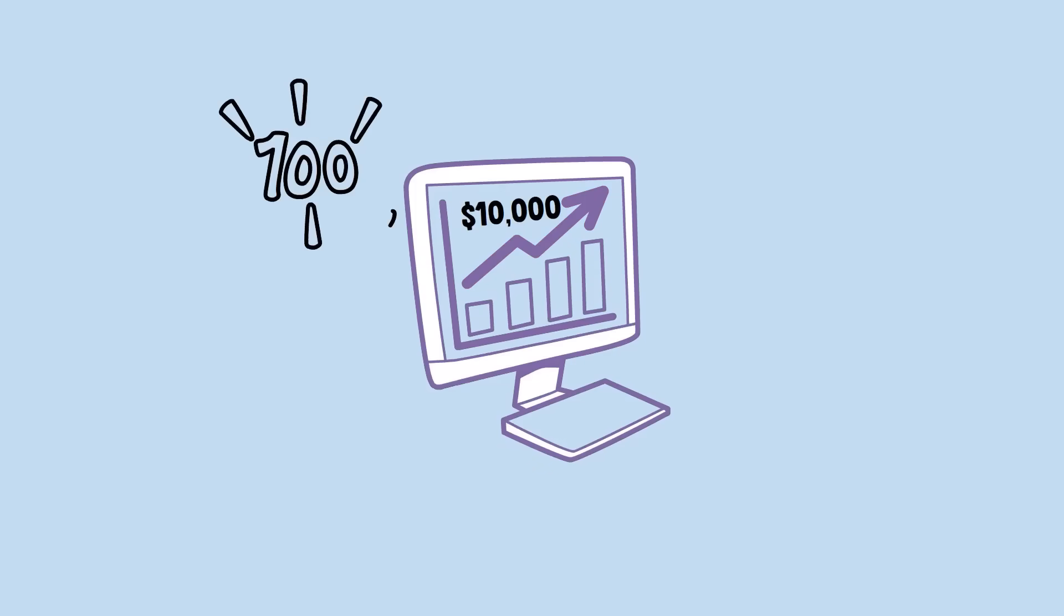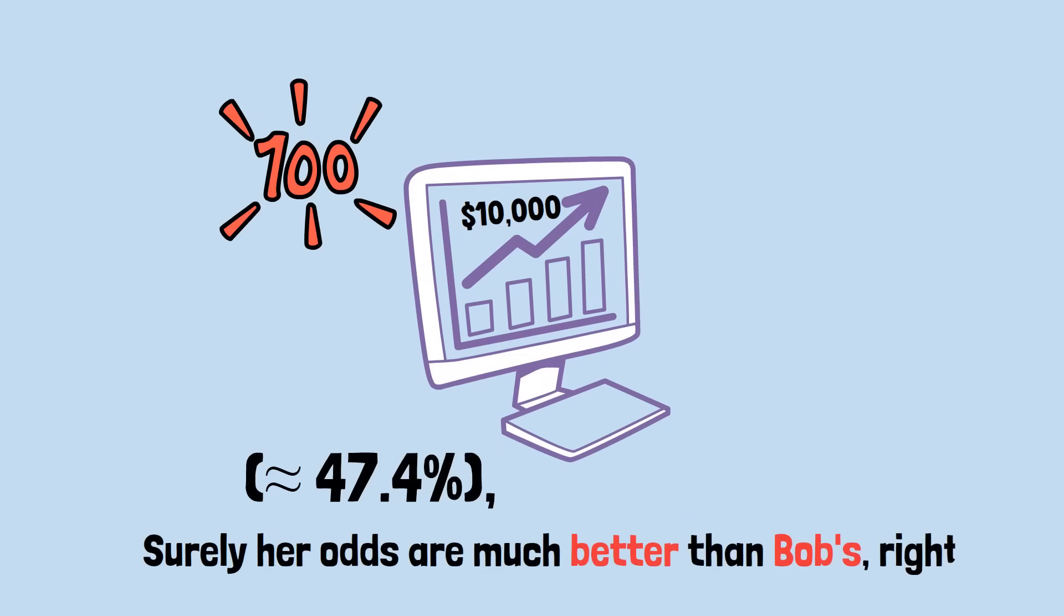She only needs to accumulate 100 more wins than losses before her bankroll disappears entirely. With nearly a 47.4% chance of winning each individual spin, surely her odds are much better than Bob's, right?